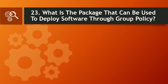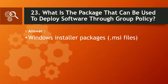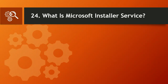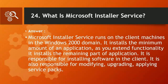Question 23: What is the package used to deploy software through group policy? Answer: Windows Installer packages — .MSI files. Question 24: What is Microsoft Installer Service? Answer: Microsoft Installer Service runs on client machines in a Windows 2000 domain. It installs the minimum amount of an application, and as you extend functionality it installs the remaining part. It is responsible for installing software on the client, and also for modifying, upgrading, and applying service packs.